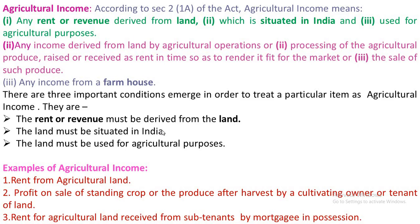The second point covers any income derived from land by agricultural operations, or processing of the agricultural produce raised or received as rent in kind so as to render it fit for the market, or the sale of such produce. The third point covers any income from a farmhouse. Three important conditions must be met: 1. The rent or revenue must be derived from the land. 2. The land must be situated in India. 3. The land must be used for agricultural purposes.